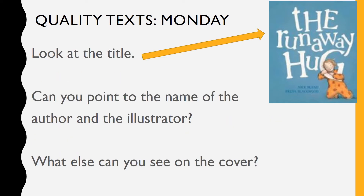Look at the title — the arrow is pointing to the title this time. What do you notice about the title? Can you point to the name of the author and the illustrator? There they are. I've put a yellow circle around the author and the illustrator. It is a little bit tricky to see, it's a little bit blurry. But the author of this book is Nick Bland and the illustrator is Freya Blackwood. When you watch this story on Storybox Library, the lady who is reading the story is the illustrator, Freya Blackwood. So she's reading the story to you, but she also drew the lovely pictures inside.